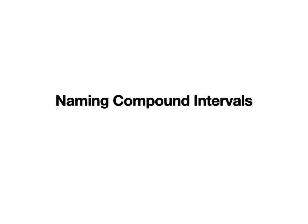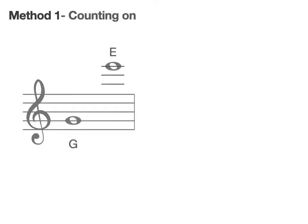But how do we go about naming our compound intervals? There are two methods that we can use. Method one involves us counting on. So here we have a G and an E. How many notes do we have between the G and E? Let's have a look. Let's write them out.